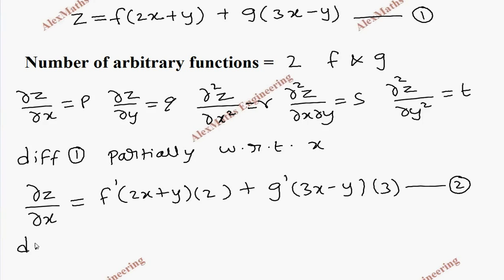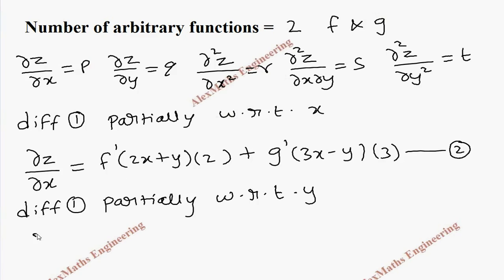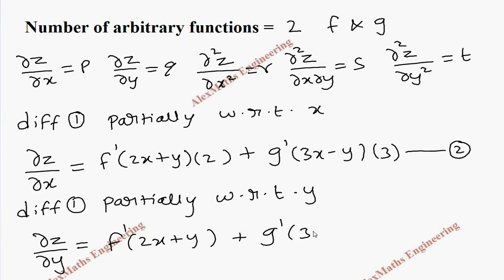Then again taking the first expression and differentiating partially with respect to y. So ∂z/∂y equals f′(2x + y) plus g′(3x − y), and by the chain rule we have minus 1 here. So let's keep this as the third expression.